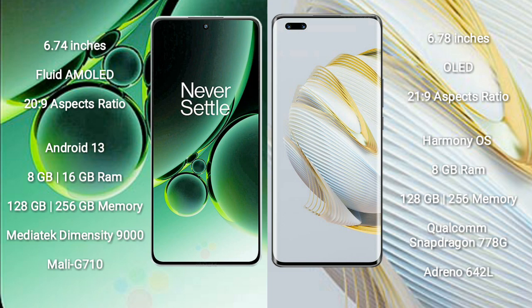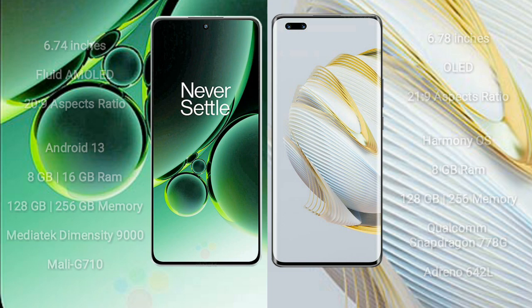OnePlus Nord 3 comes with 8GB or 16GB RAM and 128GB to 256GB internal storage, MediaTek Dimensity 9000 processor and GPU Mali G710. Huawei Nova 10 Pro comes with 8GB RAM and 128GB to 256GB internal storage, Qualcomm Snapdragon 778G processor and GPU Adreno 642L.